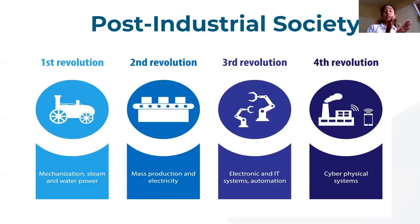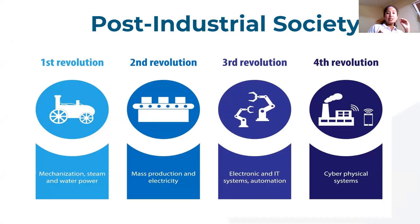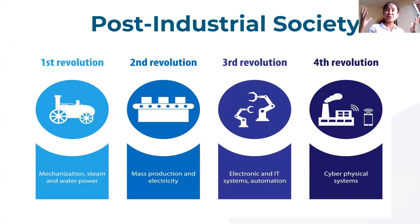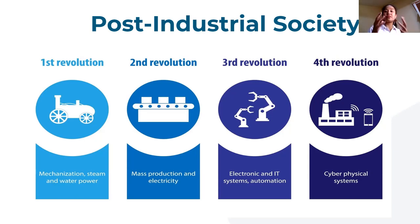Now we are in a post-industrial society. Sociologists say that back then, manufacturing was the source of wealth of economies — manufacturing industries in the first and second industrial revolution: steam power, water power, mass production, factory workers — they were the ones who produced wealth. But now we are in the fourth revolution, which involves cyber physical systems. We have automation, we have computers.